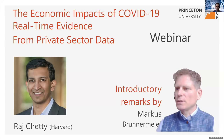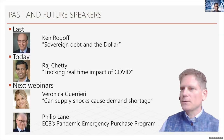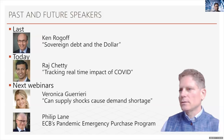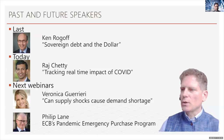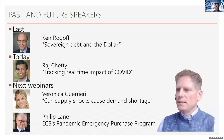As usual, I'd like to briefly recap what we've covered and what's coming up. Last Friday, Ken Rogoff was talking about sovereign debt and the role of the dollar after the COVID crisis. Today Raj will talk about tracking the real-time impact of the COVID crisis. On Friday, Veronica Guerrieri will talk about whether supply shocks can cause demand shortages. Next Monday, Philip Lane, the chief economist of the ECB, will talk about the ECB's pandemic emergency purchasing program and outline the ECB's strategy going forward.